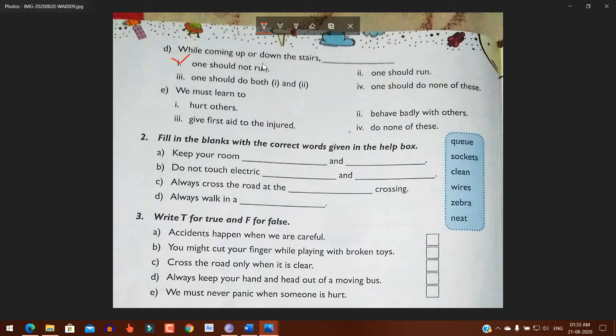Number E: We must learn to: number one, hurt others; number two, behave badly with others; number three, give first aid to the injured; number four, do none of this. The answer is number three: give first aid to the injured.